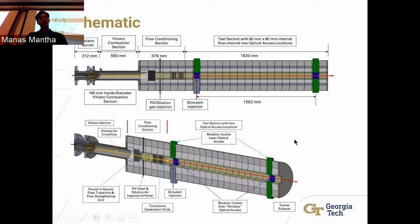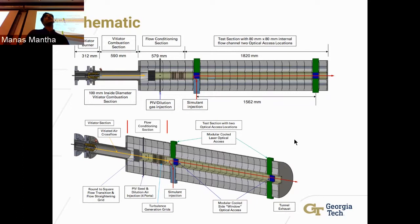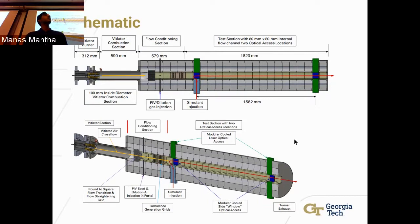Throughout the section there will likely be a heater to keep the temperature constant and to increase it from the 300 Kelvin preheated air to around 400–600 Kelvin in the test section. The green-outlined sections in the schematic are the water-cooled windows, which will provide optical access for the LDV and PIV instruments.